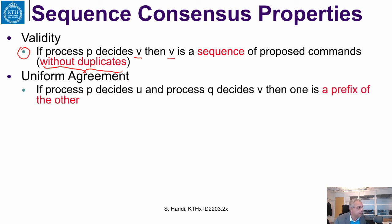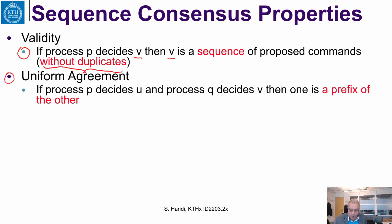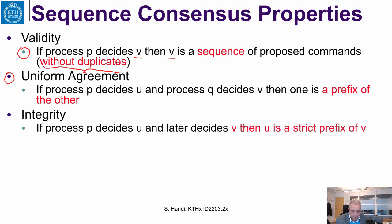Uniform agreement. Remember, in single value consensus, no two processes decide different values. Here it is a bit different. If a process P decides on a sequence U and a process Q decides on another sequence V, then one should be a prefix of the other — one could be a strict prefix of the other, and this is allowed.